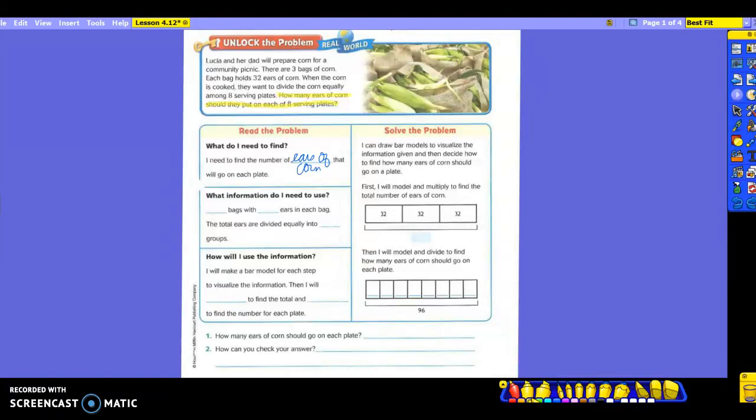Now who can tell me what numbers I'm going to use from my problem to help me figure it out? Brad? Three bags. Okay, three bags. Anything else? 32 ears of corn in each one. And then the eight serving plates. So look at how many numbers you have in your problem. Is that typically going to tell us we have more than one step? Yes.